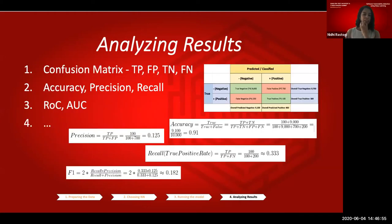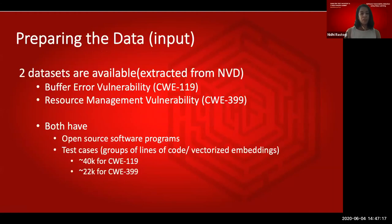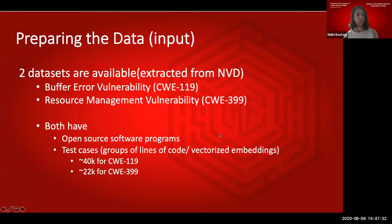Let's look at the results analysis. There are a bunch of terminologies used. Let's dive into the experiments — two datasets are available in the GitHub code: one on buffer overflow vulnerability and one on resource management. They both have open source software programs associated with them, which is where the C++ code was extracted from.